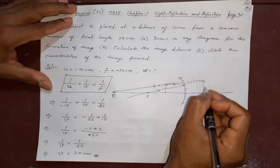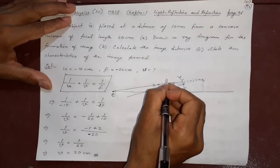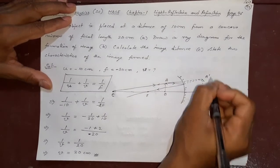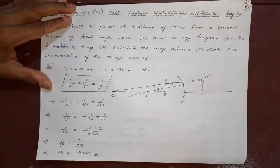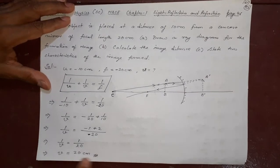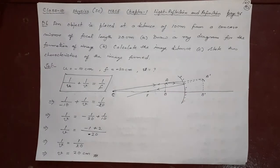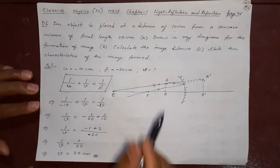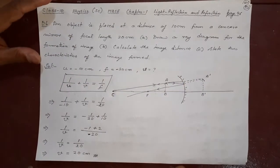So, this is the image. This is object AB. The image will be A dash B dash. Right side, 20 centimeter away here. This will be the image. See, this is the diagram. Draw the ray diagram for the formation of image. Now, what are the characteristics?